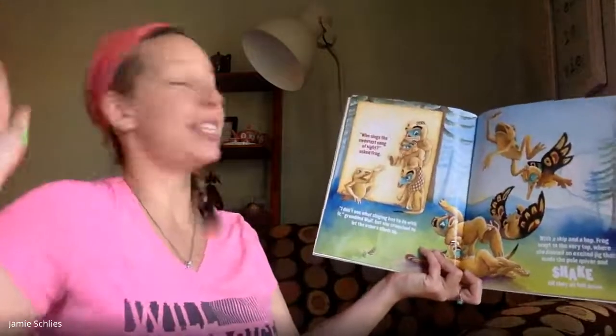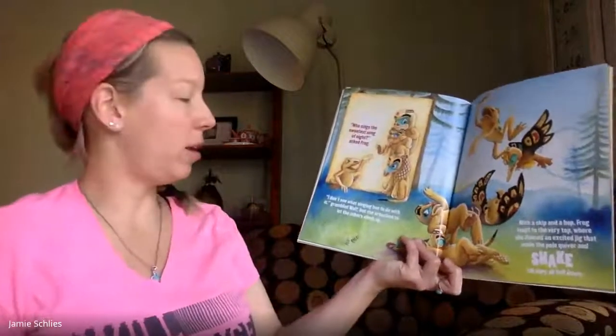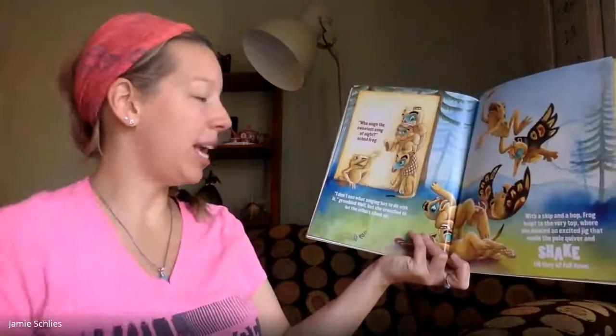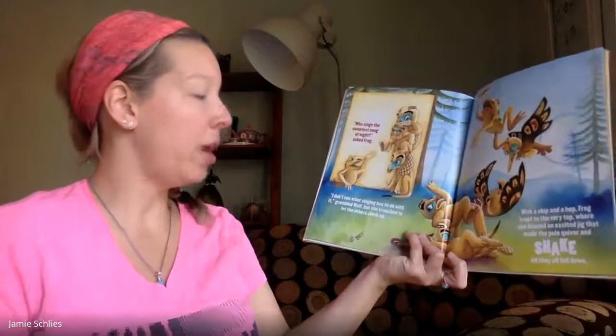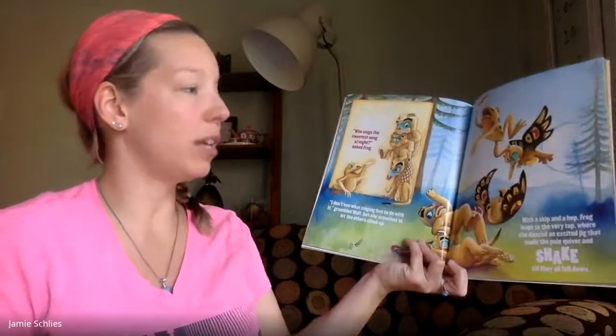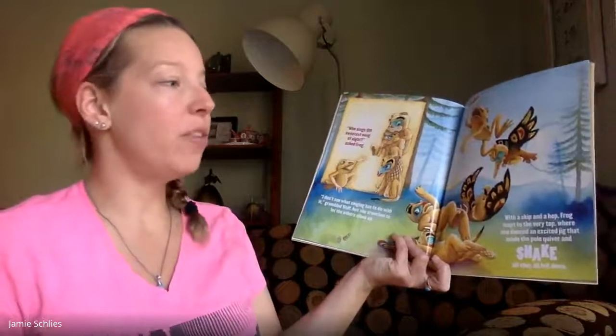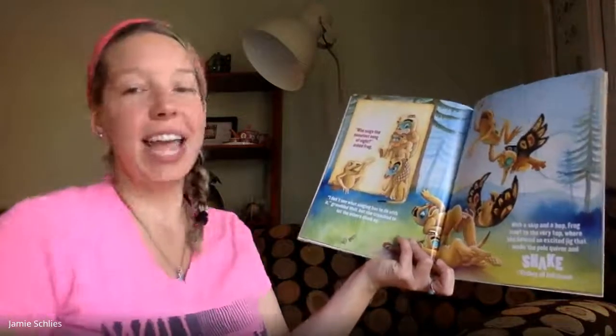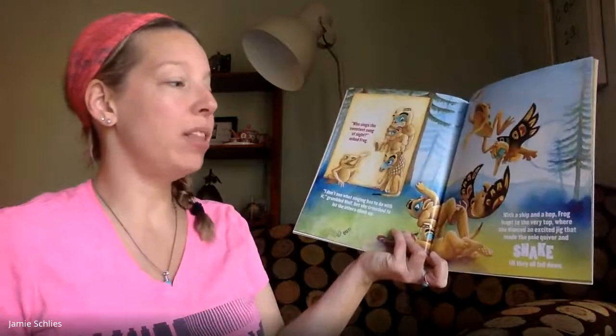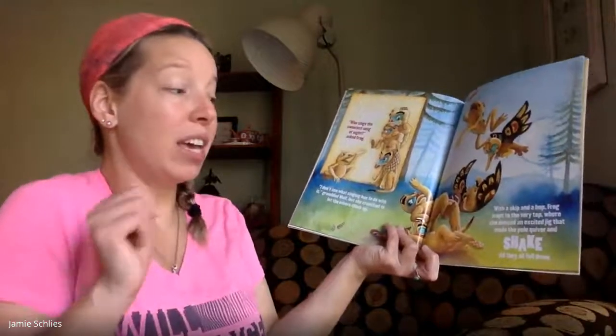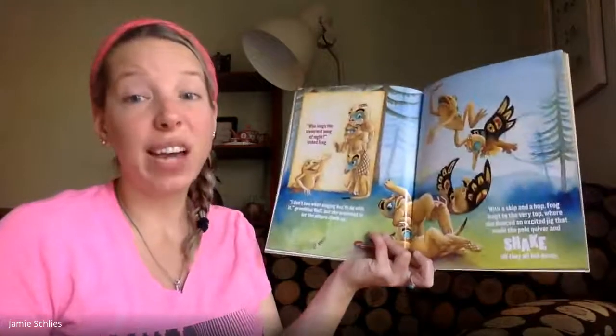Who sings the sweetest at night, asked the frog. I don't see what singing has to do with it, grumbled the wolf, but she crouched to let the others climb up. With a skip and a hop, frog leapt to the very top, where she danced an exciting jig that made the pole quiver and shake until they all fell down.